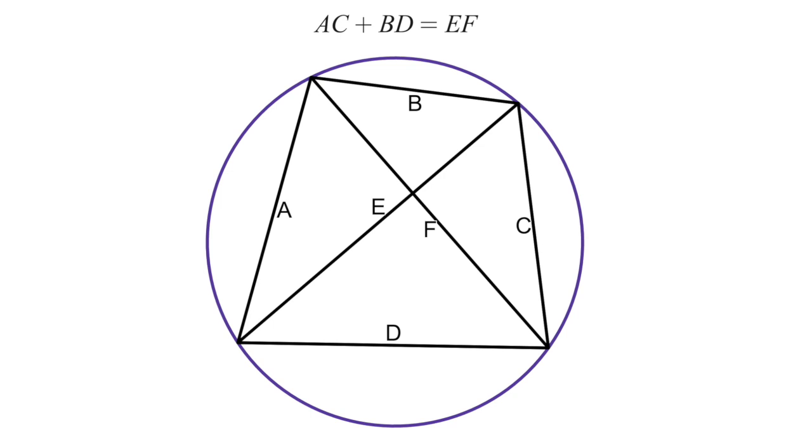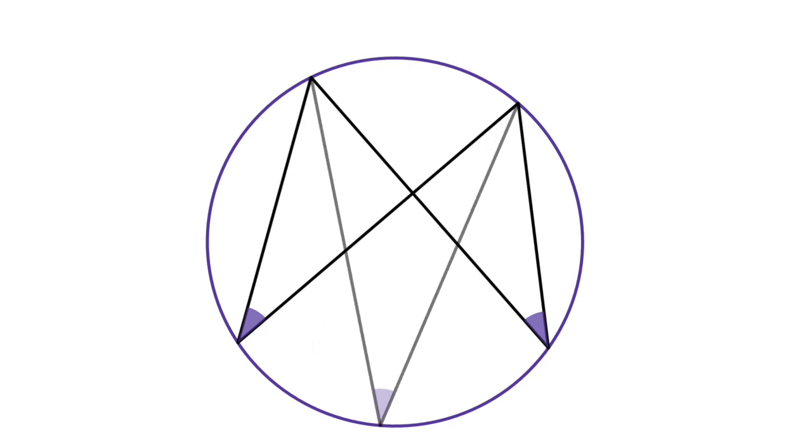So what is it about a cyclic quadrilateral that makes this work? Well, notice that these two angles are the same because of the inscribed angle theorem, which says that lines drawn from two points on a circle to a third point on the arc between them will form an angle that is the same for all the points on that arc.